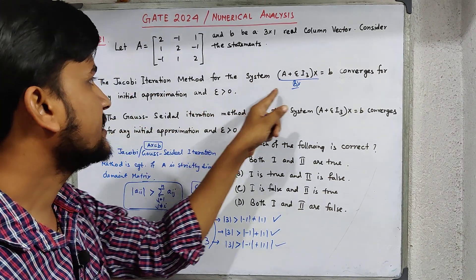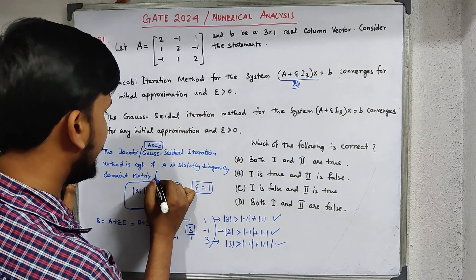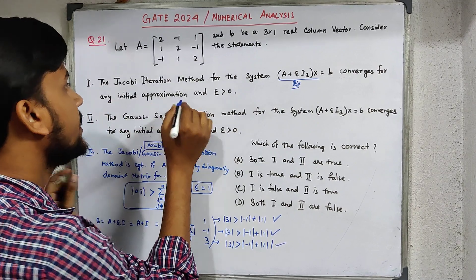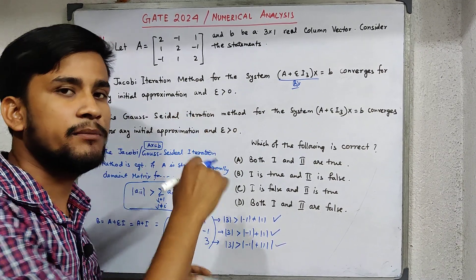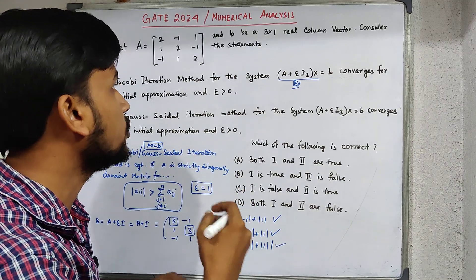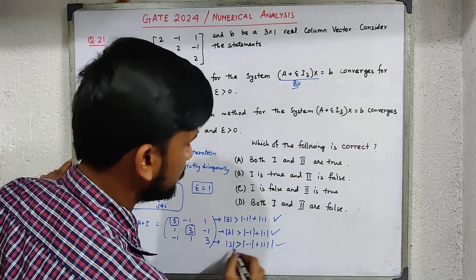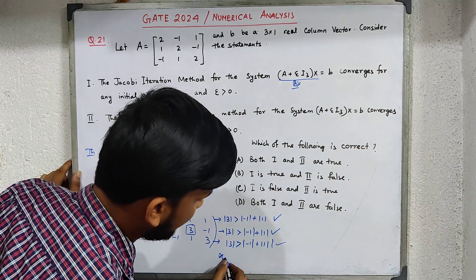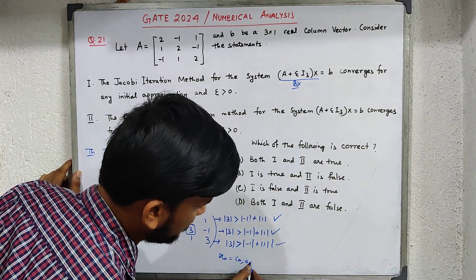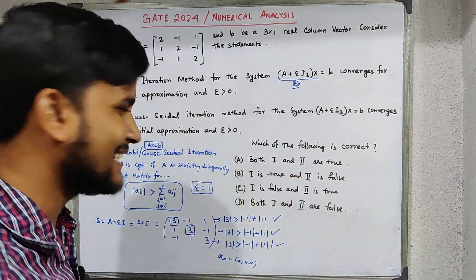This means the iteration method converges for any arbitrary vector, for any initial approximation. For the system Bx=b, suppose we take the first solution as x₀ = [0, 0, 0]. All these concepts I already covered in videos on these topics.